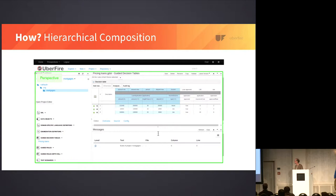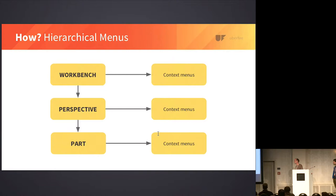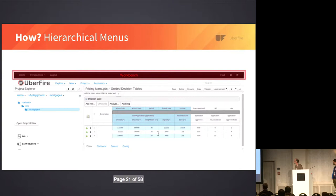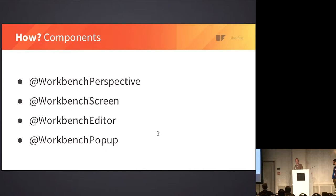Hierarchical menus: because we have the notion of workbench perspectives and screens, we support definition of menus and toolbars at three different levels — workbench, perspective, and part. The four primary components you can plug into the framework are: a perspective, workbench screen, workbench editor, and workbench popup.